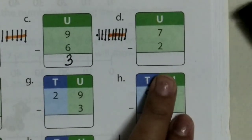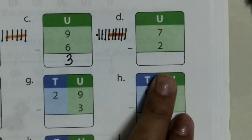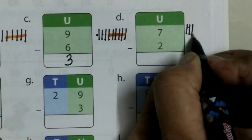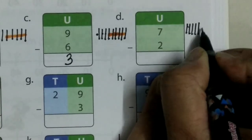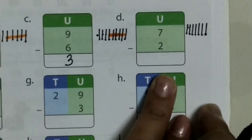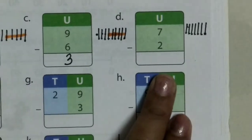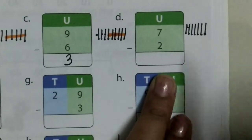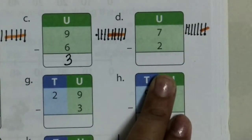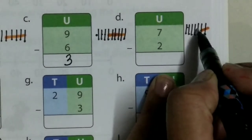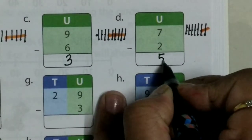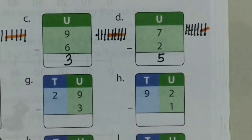Now 7 minus 2. Draw 7 lines: 2, 3, 4, 5, 6, 7. How many lines to remove? 2. Cut the 2 lines. Then count: 1, 2, 3, 4, 5. So 7 minus 2 equals 5.